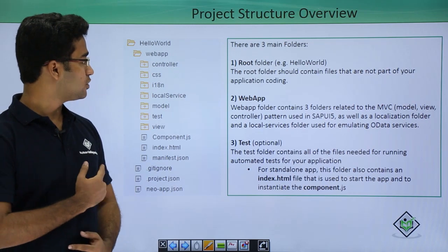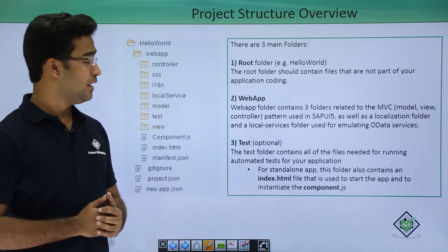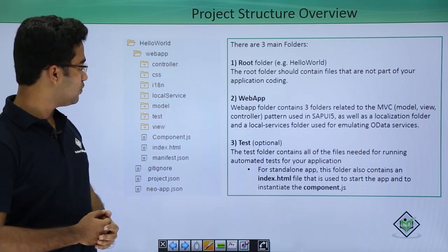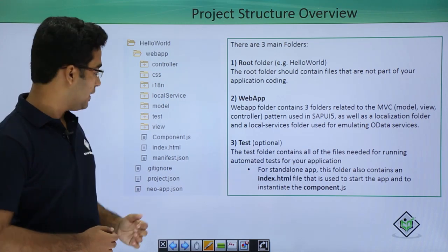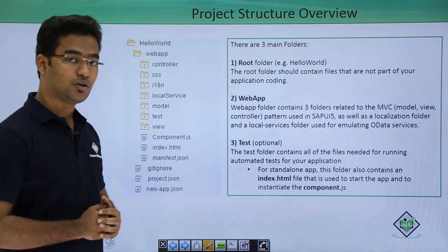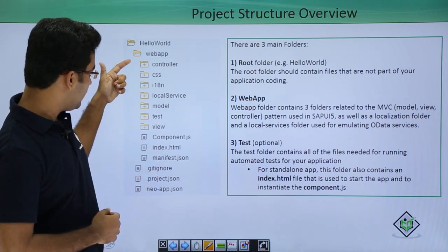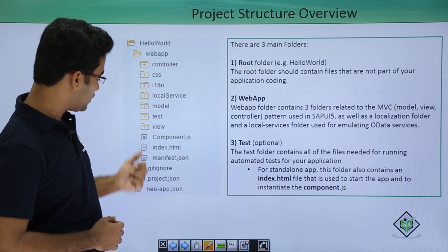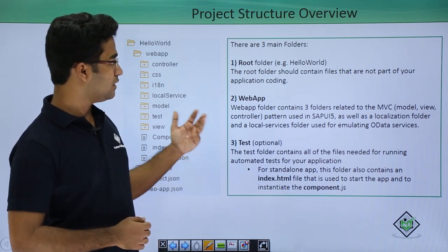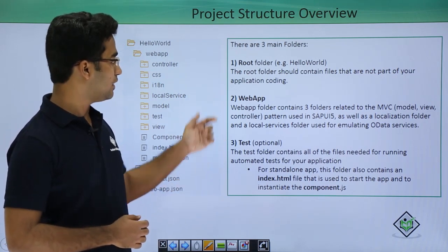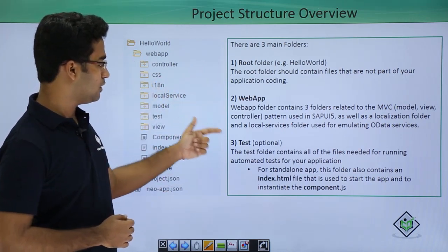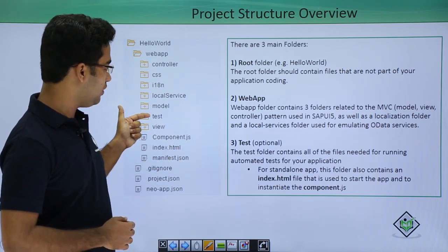This is the project structure. I have created a Hello World application. You can see the web application folder which contains controller, CSS, i18, local service, model, test, and view folders, along with the component.js, index.html, and manifest.json files. Basically there are three folders: the root folder, the web app folder, and the optional test folder.